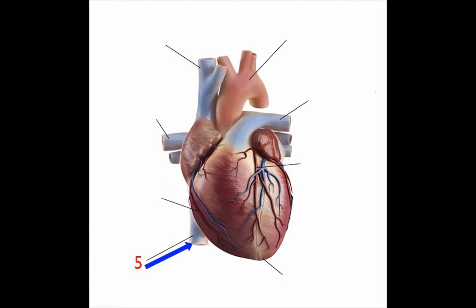Structure number six: this structure supplies blood to the right ventricle, the right atrium, and the sinoatrial node and AV nodes, which regulate the heart rhythm. Which structure is this? Structure number seven.